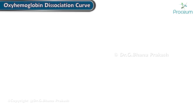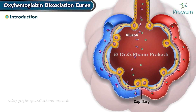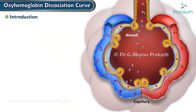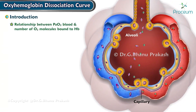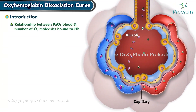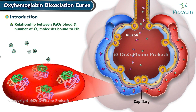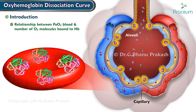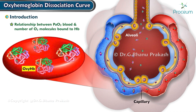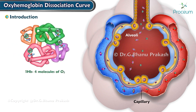The oxyhemoglobin dissociation curve illustrates the relationship between the partial pressure of oxygen in the blood and the number of oxygen molecules bound to hemoglobin. When oxygen is bound to hemoglobin, the resulting molecule changes conformation. This new conformation is referred to as oxyhemoglobin. One hemoglobin molecule can carry up to four molecules of oxygen.